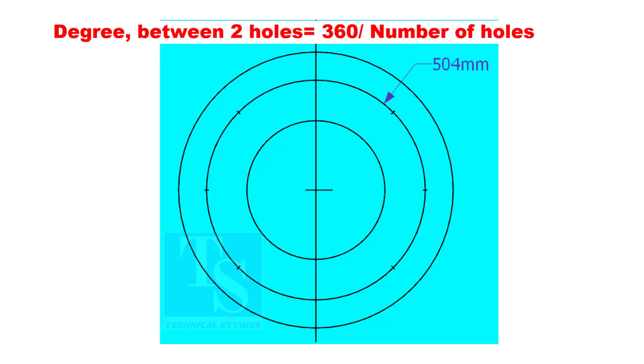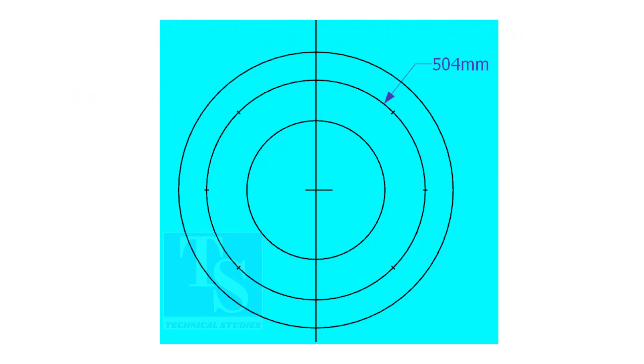If you divide 360 by the number of holes, you will get the angle between two holes. Chord length equals sine 45 divided by 2 multiplied by PCD.